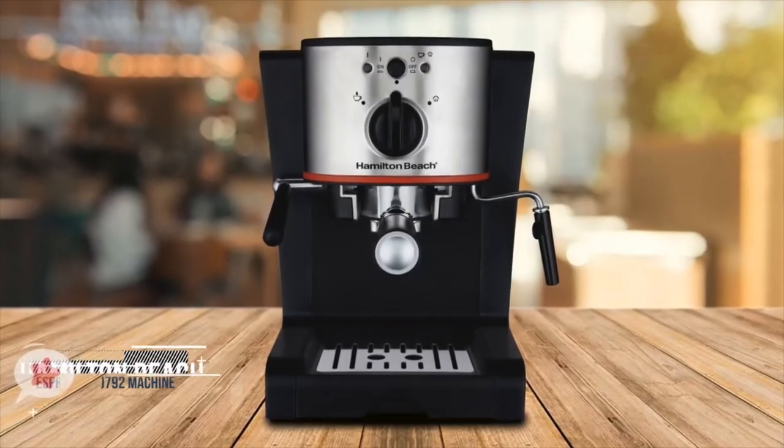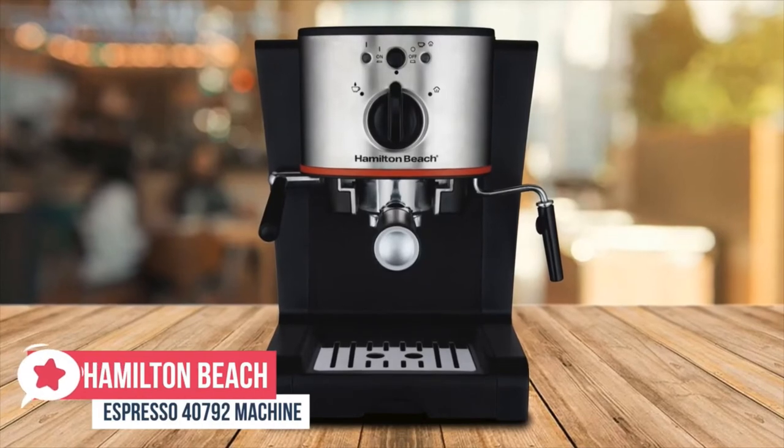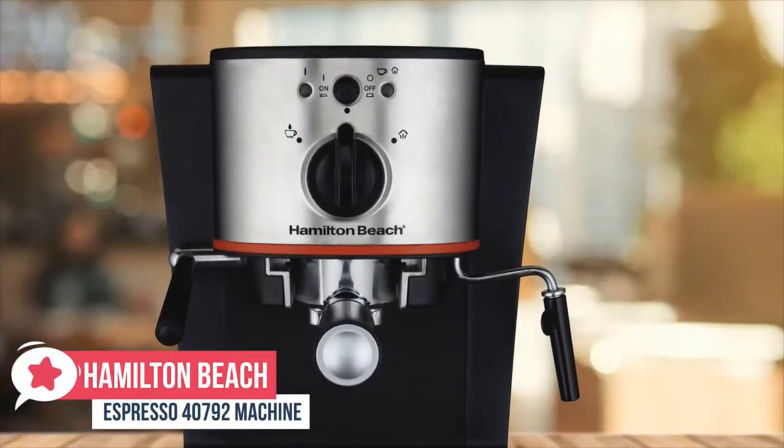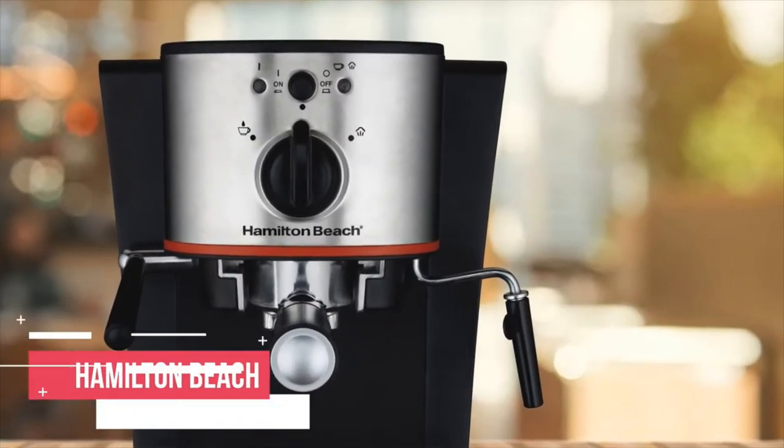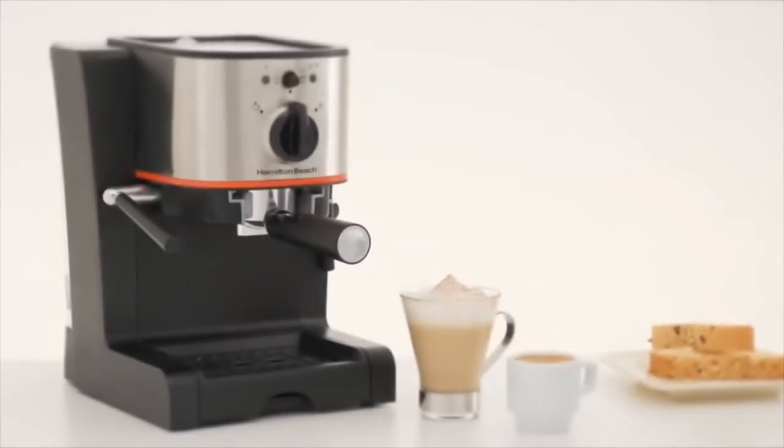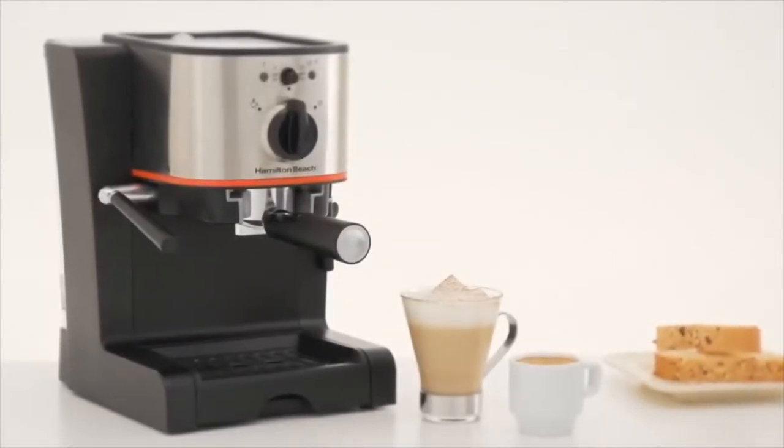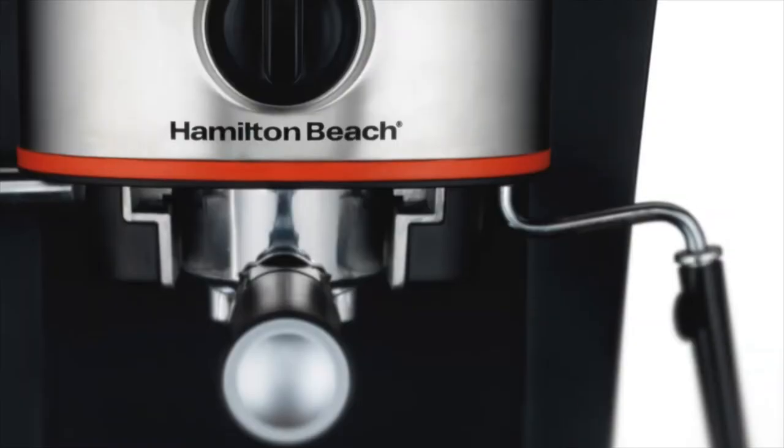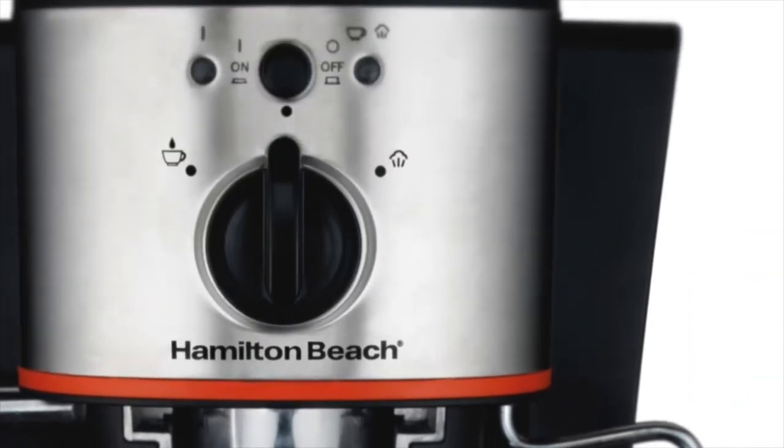At number 2 is the Hamilton Beach Espresso 40792 machine. Now you can take the next step in your pursuit of the perfect cup with the Hamilton Beach 40792 Espresso and Cappuccino Maker. Inspired by European cafes, this Espresso Maker helps you indulge in rich-tasting espresso, cappuccino, and latte without sacrificing convenience.